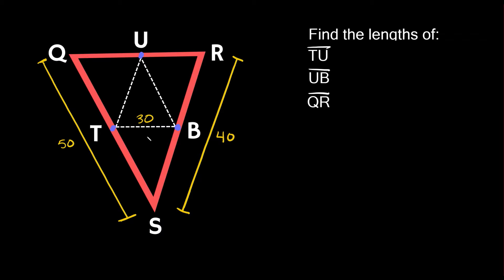A couple of cool relationships end up happening. The first one is that we create parallel lines. So if I draw a line from this midpoint T to B, this perfectly horizontal line ends up being parallel to this big segment of the triangle up here. The same thing happens with the other mid-segments — each one is parallel to the big segment of the triangle opposite to it, including the segment from U to B, which is parallel to the side from Q to S.